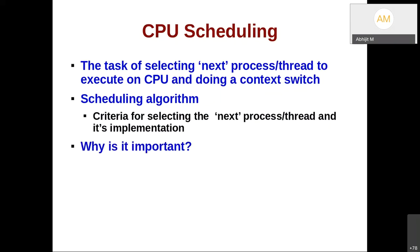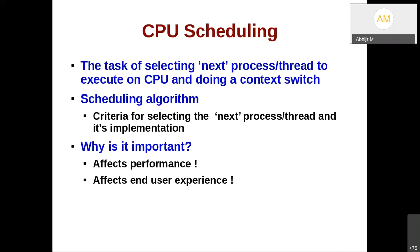Why is it important to discuss scheduling algorithms and have different choices? First of all, it affects performance — if you have a very bad scheduler, end users will start experiencing delays and the system will work slowly. Scheduling does impact performance a lot. That in turn affects end user experience. A criteria like response time matters — for example, you click on a window and it does not close immediately; that is a bad user experience. Users want a very fast and quick response, which depends largely on how processes get scheduled.